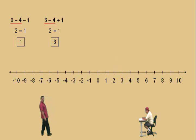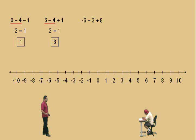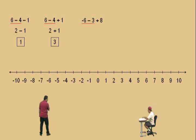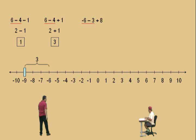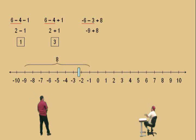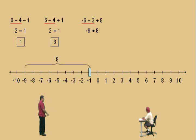Let's do another one: negative six subtract three plus eight. Now don't get scared — just relax. We must work left to right. We start at negative six and move to the left three times, which gives us negative nine. And to the negative nine, we now have to add eight, which sends us back to the right eight times. Our answer is negative one. That is the correct answer. Just work left to right and you'll be fine.